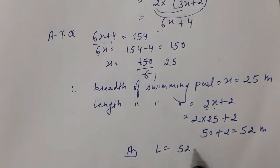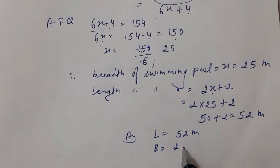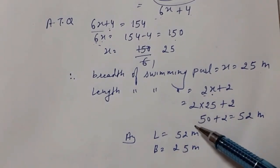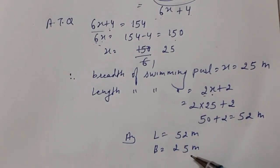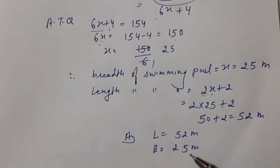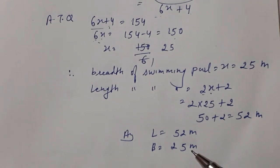तो answer में: length = 52 meters और breadth = 25 meters. अपने answer को हम check कर सकते हैं — इस length और breadth से perimeter find करेंगे तो वही 154 meters आएगा जो question में given था।